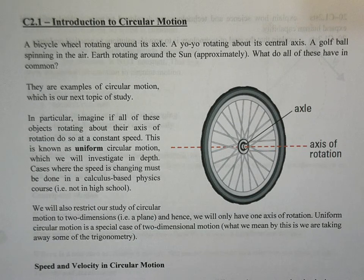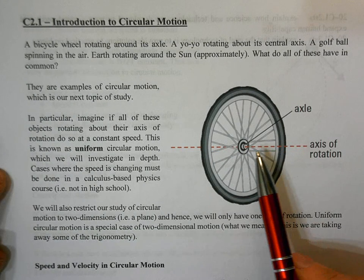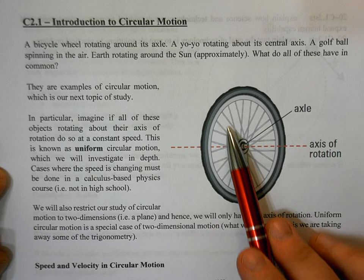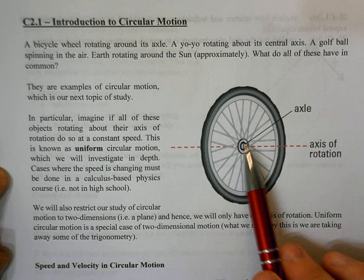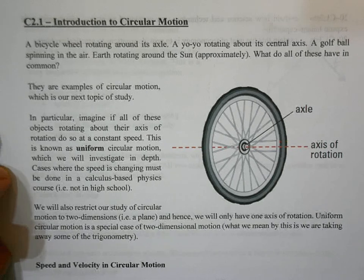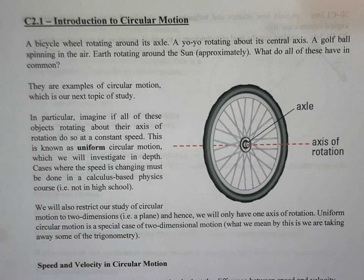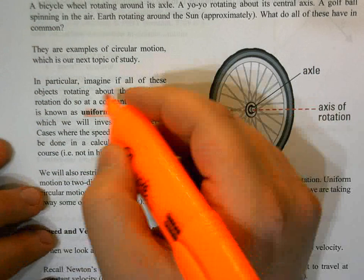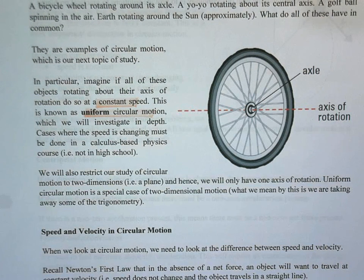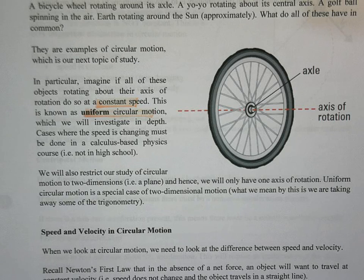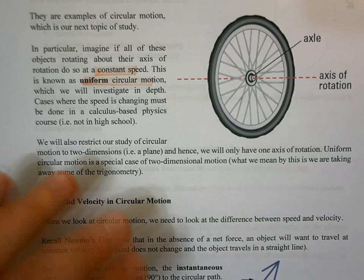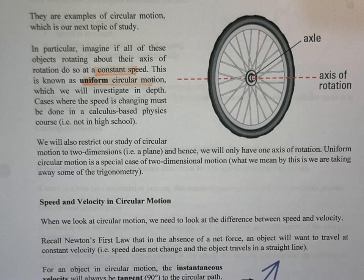In circular motion, we're going to have an axis of rotation, meaning all points on our object rotate about this axis. We're interested in a special case called uniform circular motion, where we assume the speed of rotation is constant. That will make life a little bit easier. We're also going to restrict circular motion to two dimensions — to a plane.